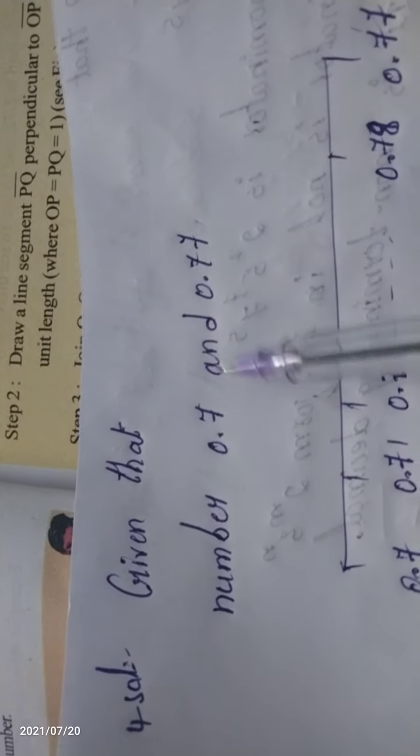The fourth question: given numbers are 0.7 and 0.77. I am taking the number line to understand better. The first number is 0.7 and the last number among these two is 0.77. After 0.7, the numbers are 0.71, 0.72, 0.73, 0.74, up to 0.77. We have to find only two irrational numbers between these.